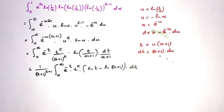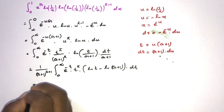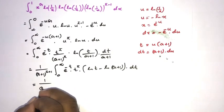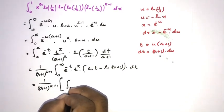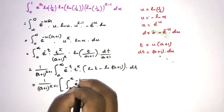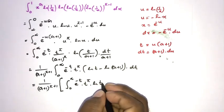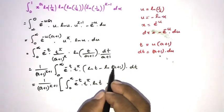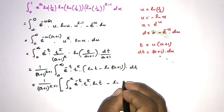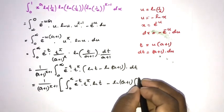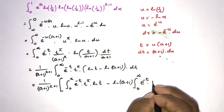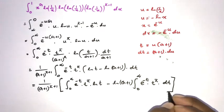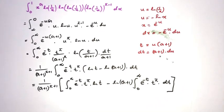Using the logarithm property, natural log of t over (g plus 1) equals natural log of t minus natural log of (g plus 1). We break the integral into two parts: 1 over (g plus 1) raised to pi plus 1, times the integral from 0 to infinity of e to the minus t times t to the pi times natural log of t dt, minus natural log of (g plus 1) times the integral from 0 to infinity of e to the minus t times t to the pi dt.